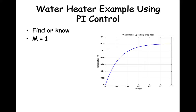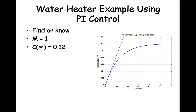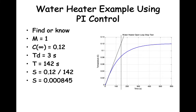From the graph, we see that C infinity is 0.12. Then we add the tangent line and the vertical line when the tangent line crosses C infinity. We can find that the apparent transport lag time Td is 3 seconds and the process time T is 142 seconds. Then knowing C infinity and the process time T, we can calculate the slope: 0.000845. Finally, we can calculate the process steady state gain K, which is 0.12. So now we know M, Td, and T.